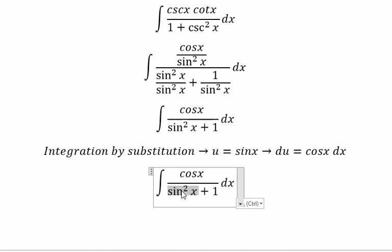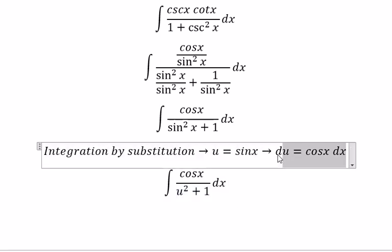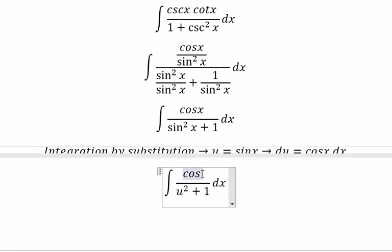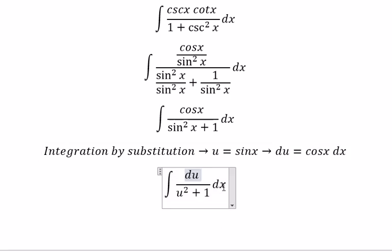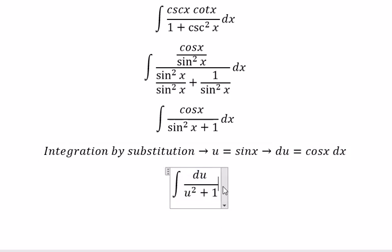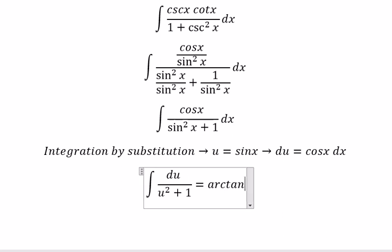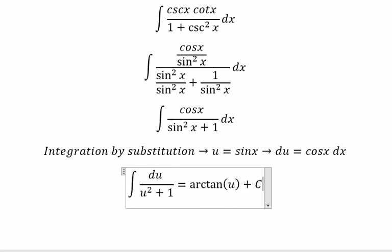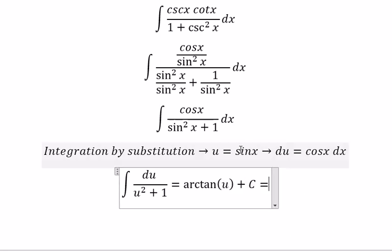So this one we change to u squared, and cosine x dx we change to du. And now we get arctan of u plus c, where u is sine x.